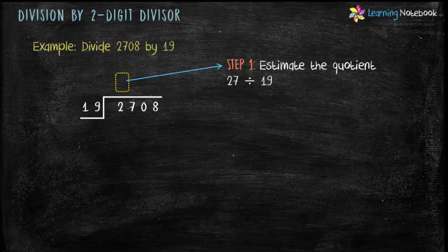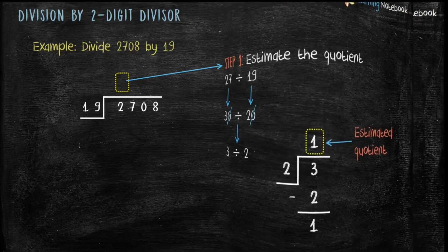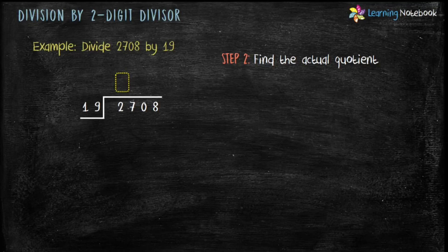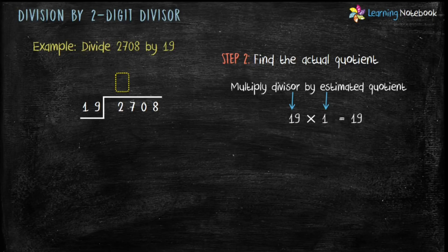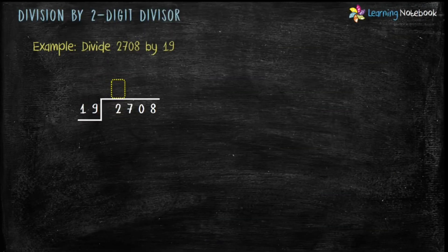Let's first estimate the question for 27 divided by 19. 27 is rounded off to 30 and 19 is rounded off to 20. Cancel 0 by 0 and we get 3 divided by 2. On dividing we get 1 as the estimated quotient. Now step 2 is to find the actual quotient. Multiply divisor 19 by estimated quotient 1, and we get 19. But 19 is less than 27. So we try multiplying the divisor by 2. 19 into 2 equals 38. But 38 is greater than 27. Therefore 1 is the actual quotient. 19 into 1 equals 19, and 27 minus 19 equals 8.